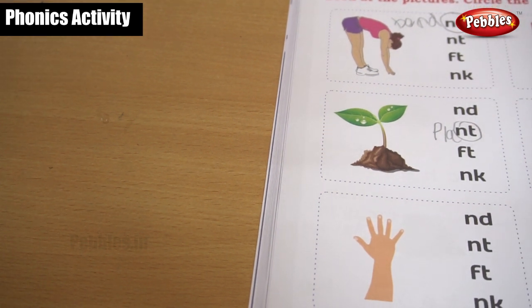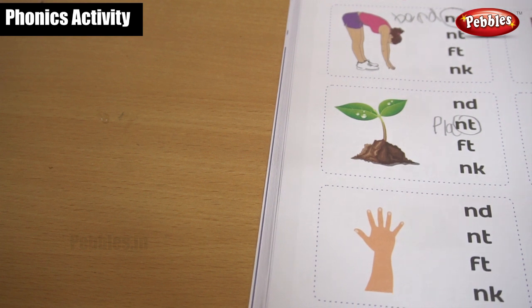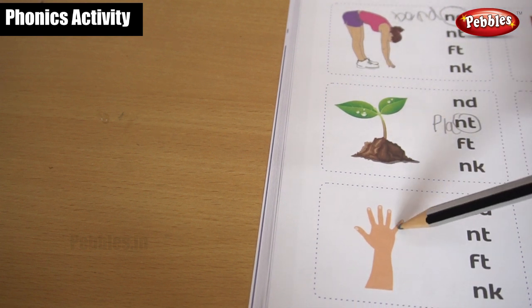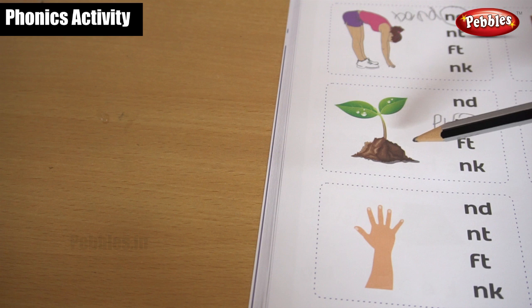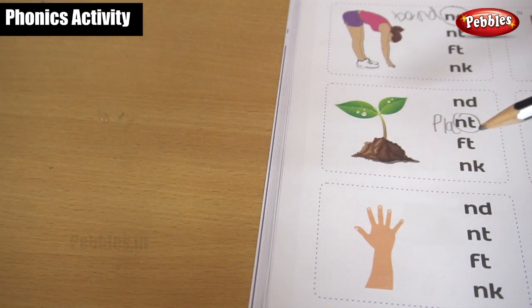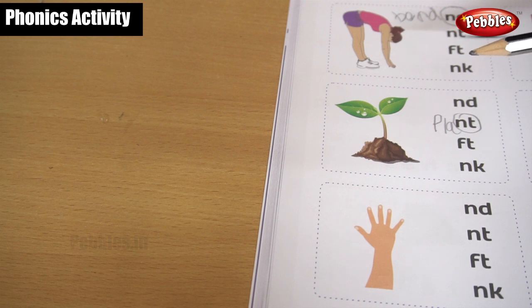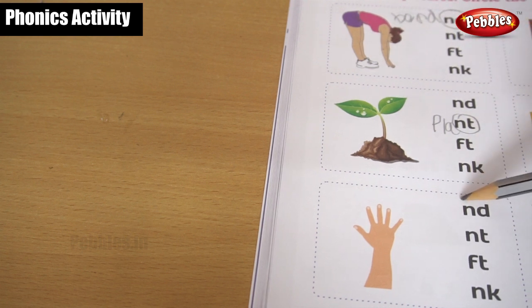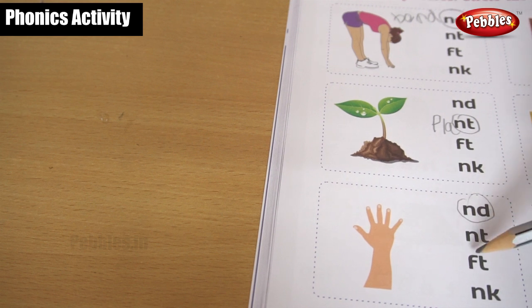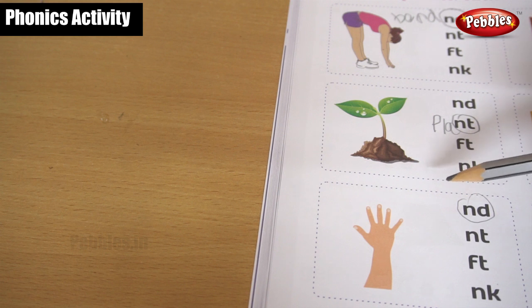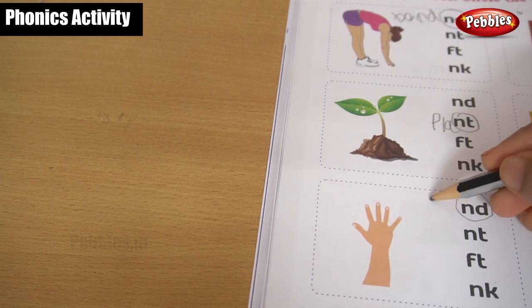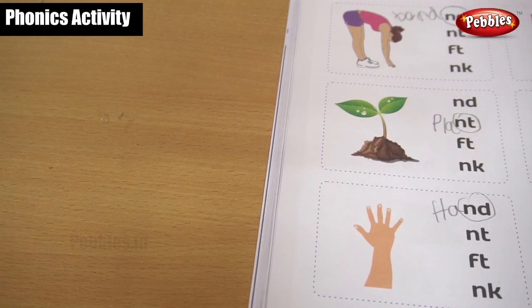Okay, let's go for the next picture children. This is hand. This is not a five. This is a hand. Hand, hand. Okay, hand. End. Okay, this is ending with N-D, isn't it? Not N-D or F-T or N-K. Hand, hand. Okay, hand. Okay, children.